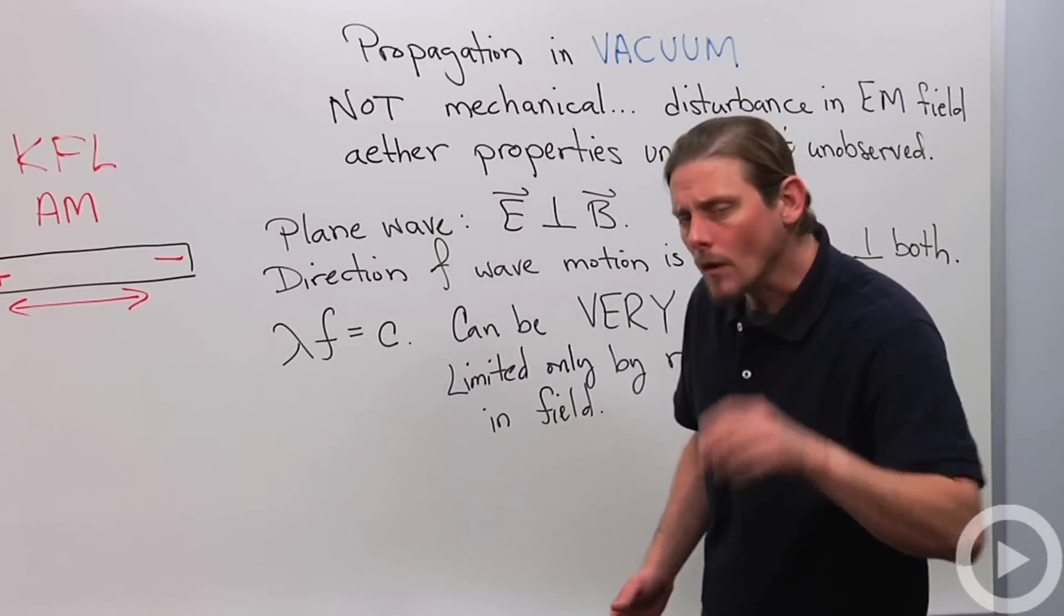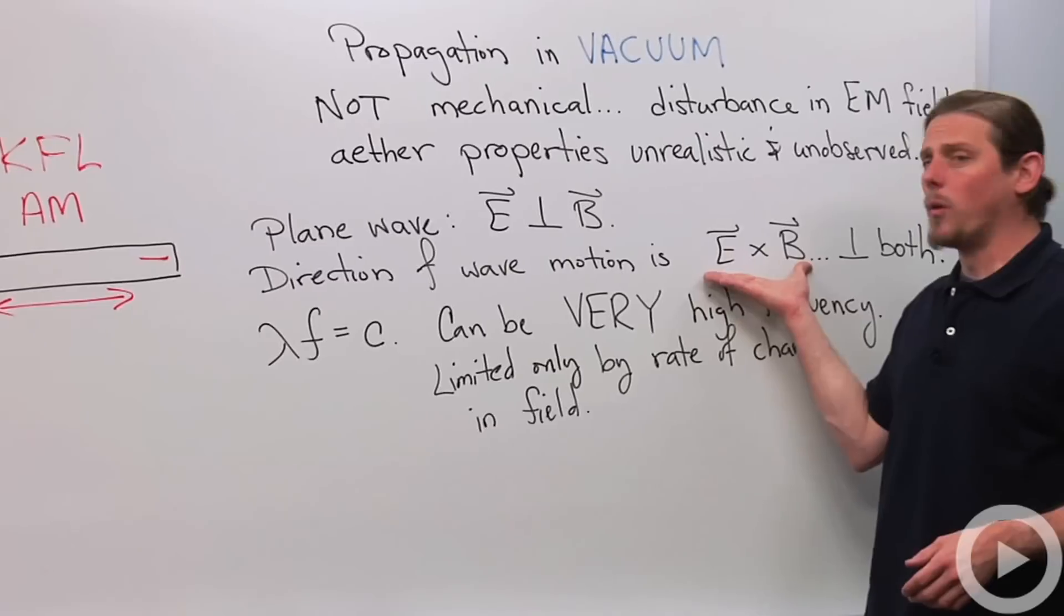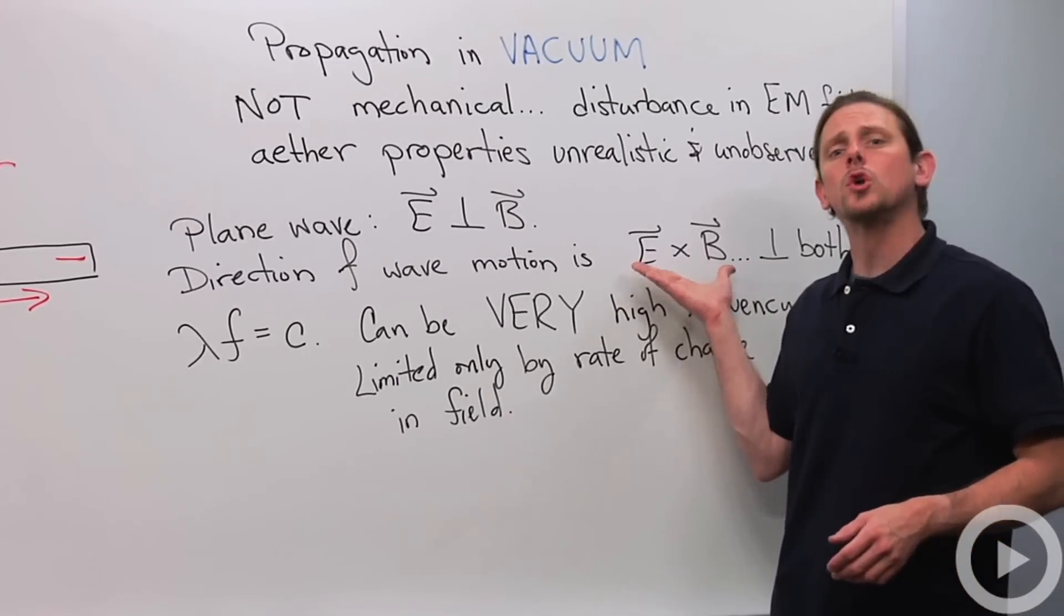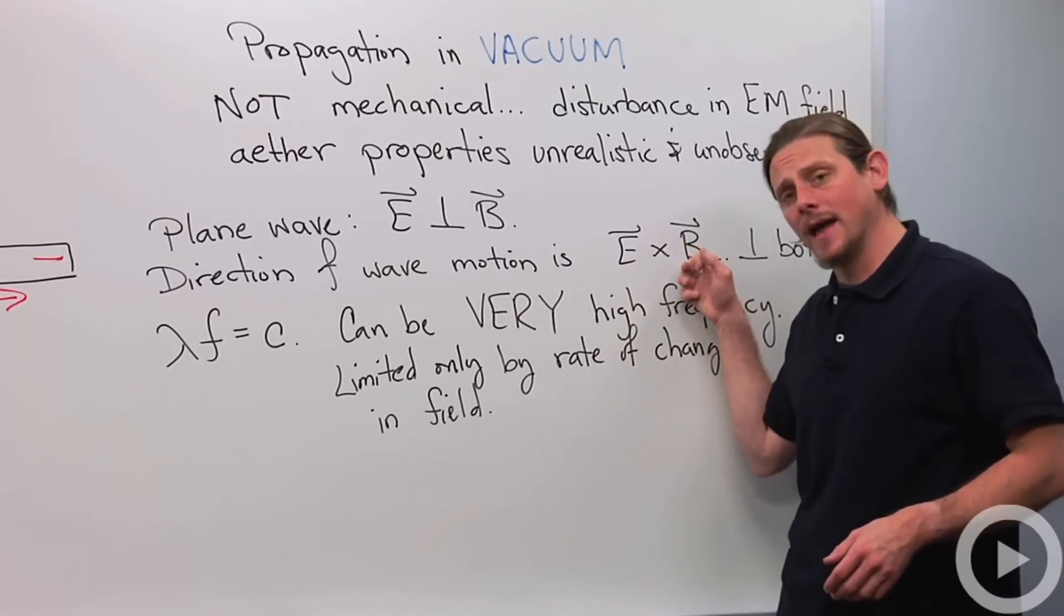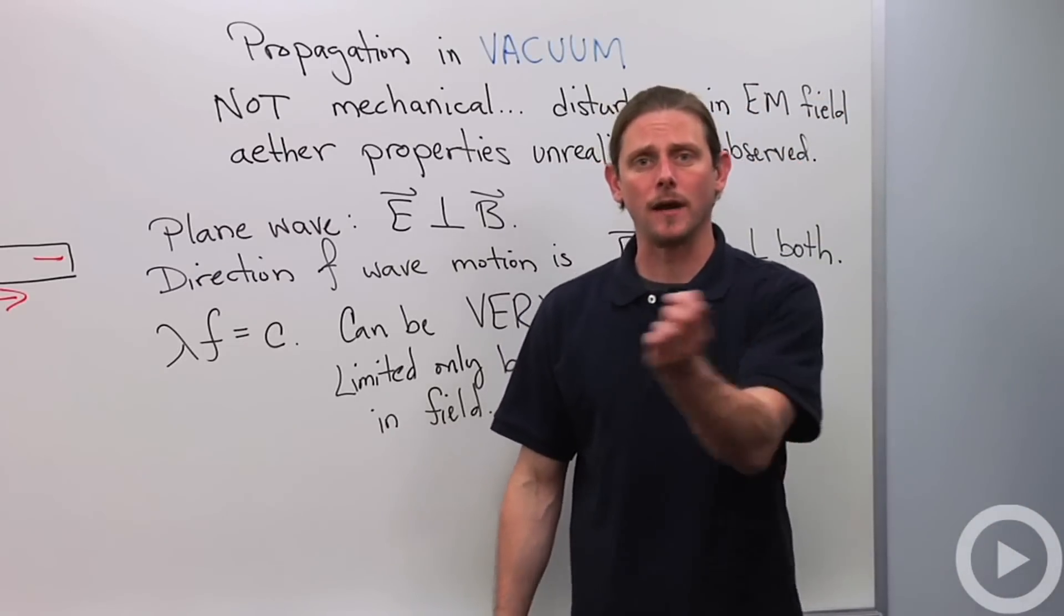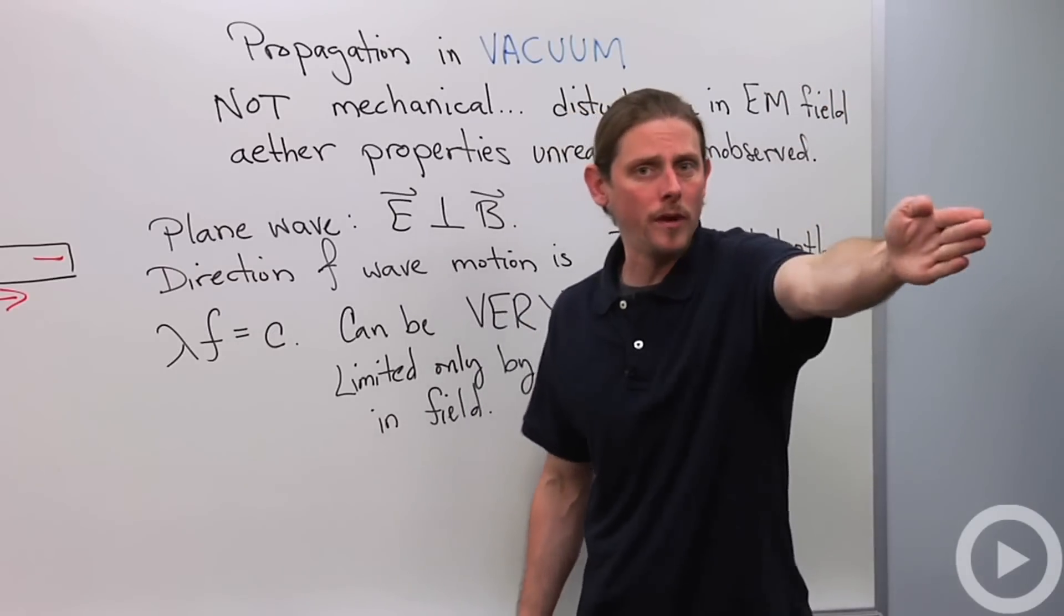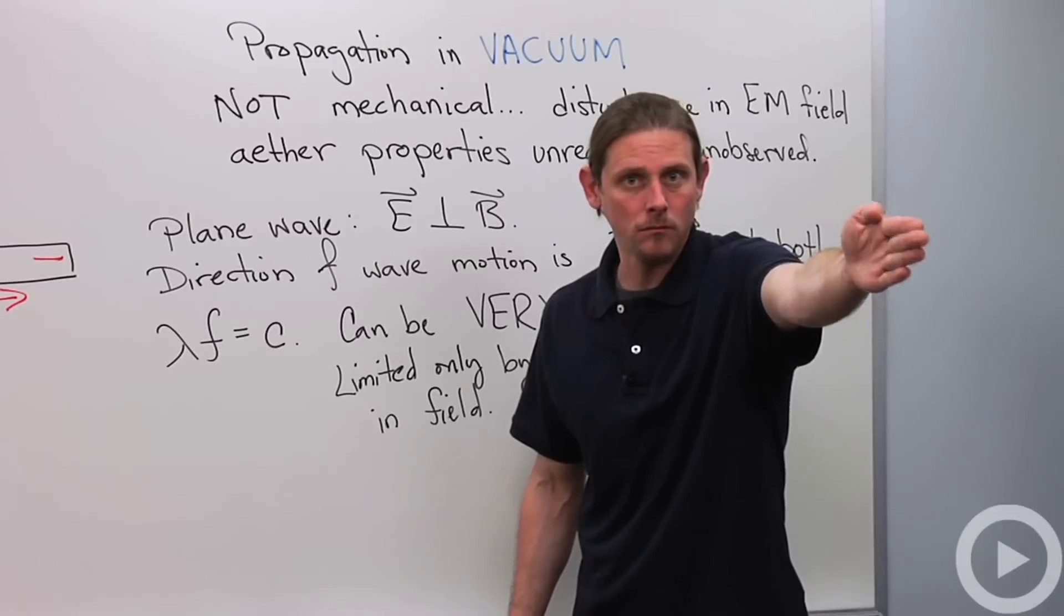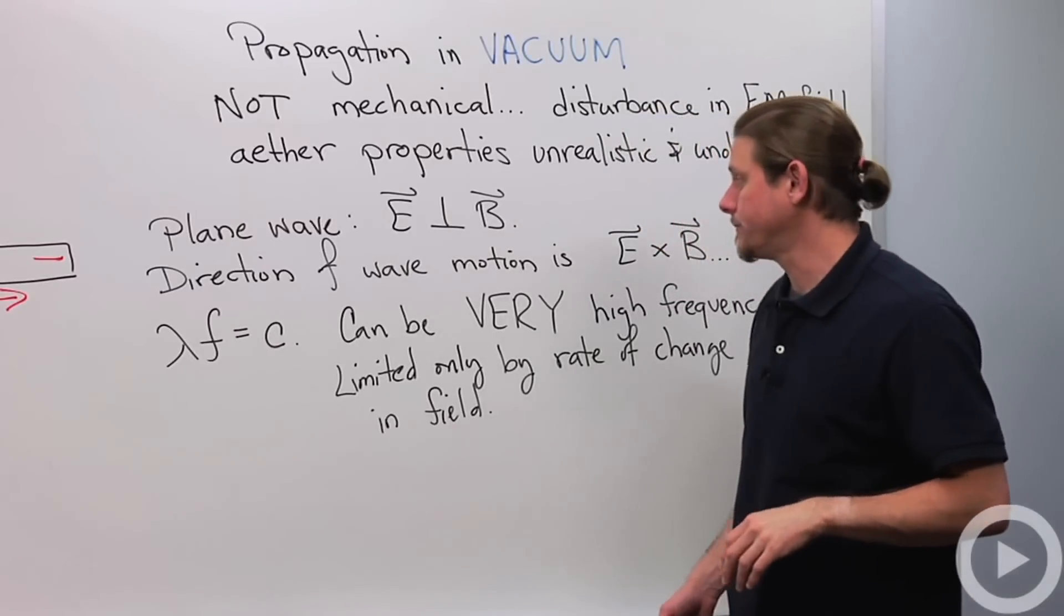All right. The direction of propagation of the wave is always given by E cross B. So it's perpendicular both to the electric field and to the magnetic field. In that previous example, the electric field was like that, magnetic field is like that, the wave will be going that direction. Perpendicular to both the electric and the magnetic fields.